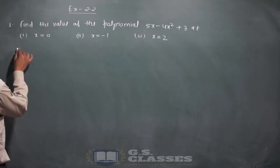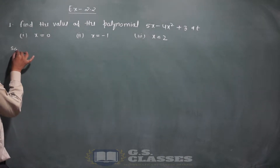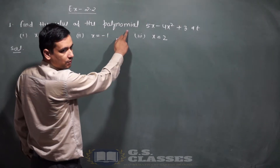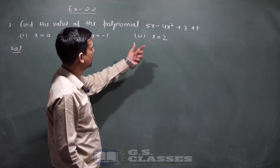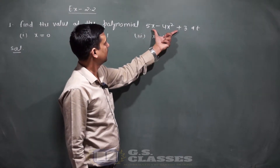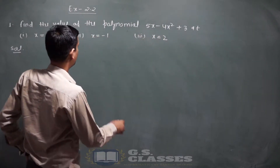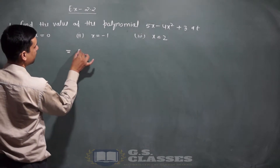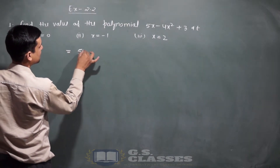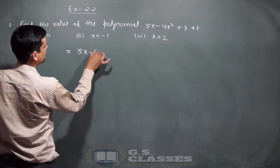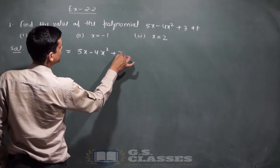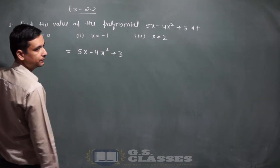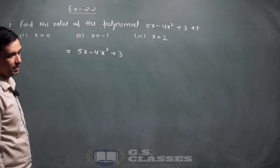सुनिए ध्यान से कैसे करना है। हमें एक polynomial given है — कल हमने polynomial को discuss किया था। हमें polynomial given है: 5x minus 4x square plus 3।